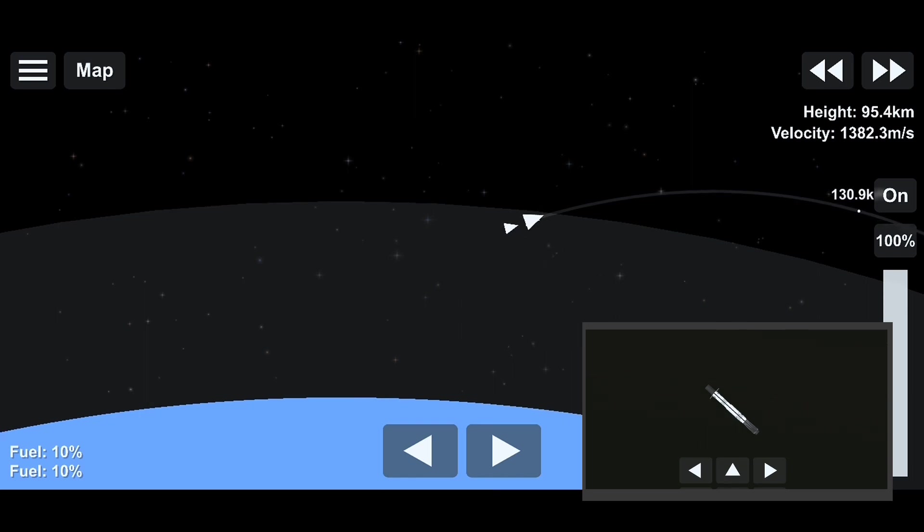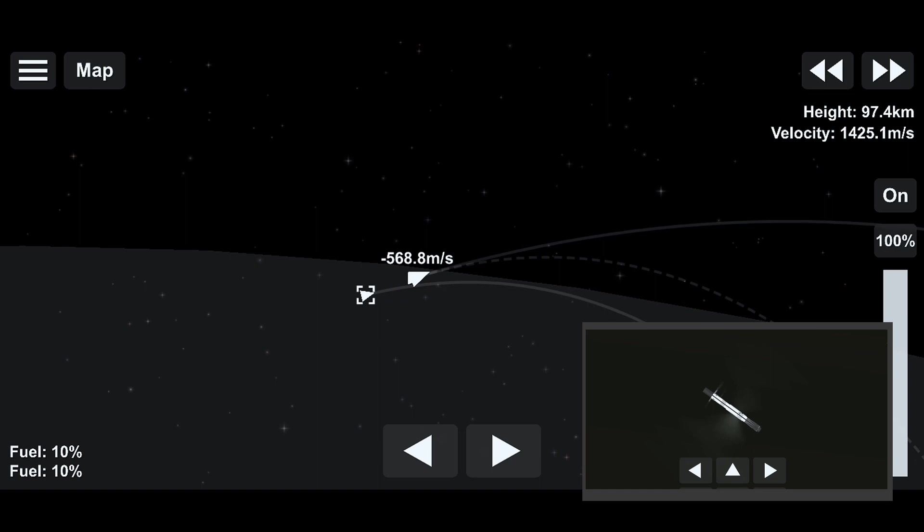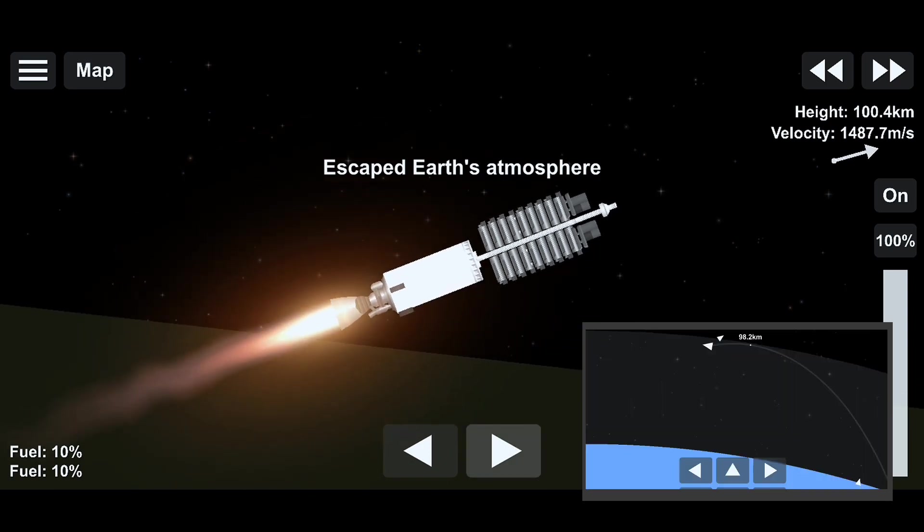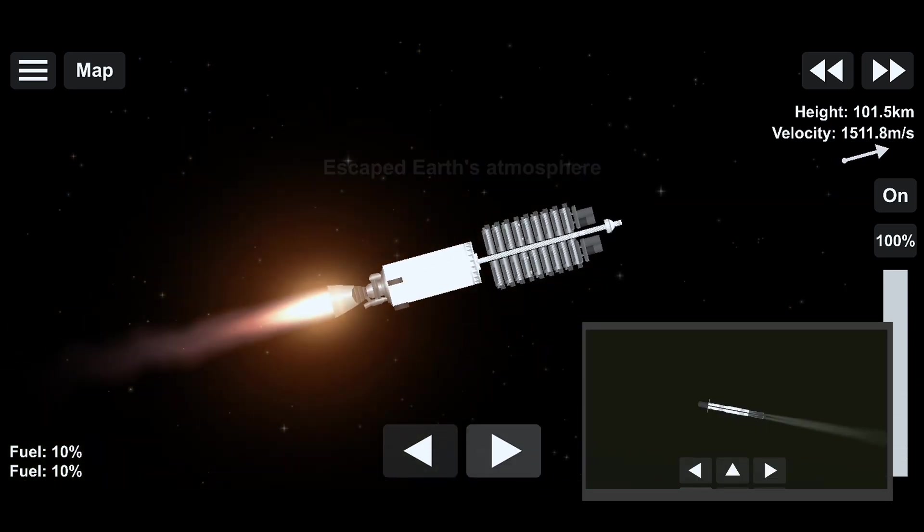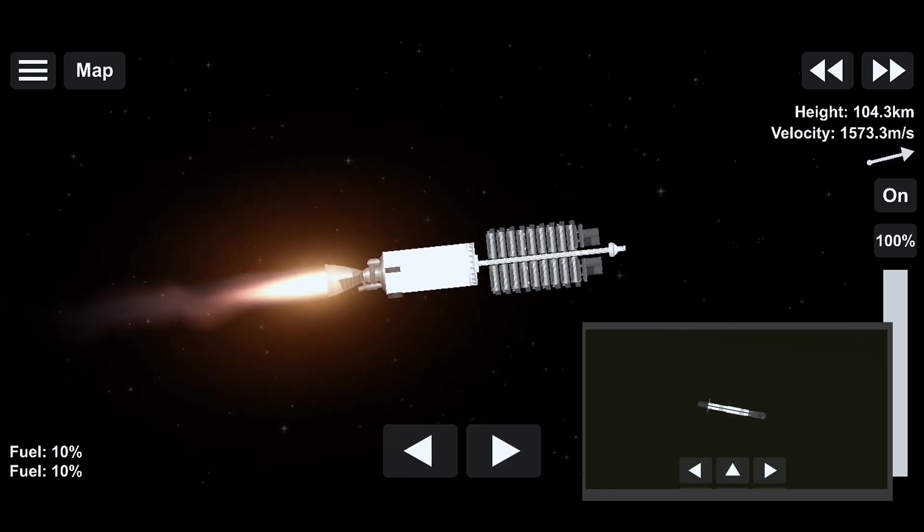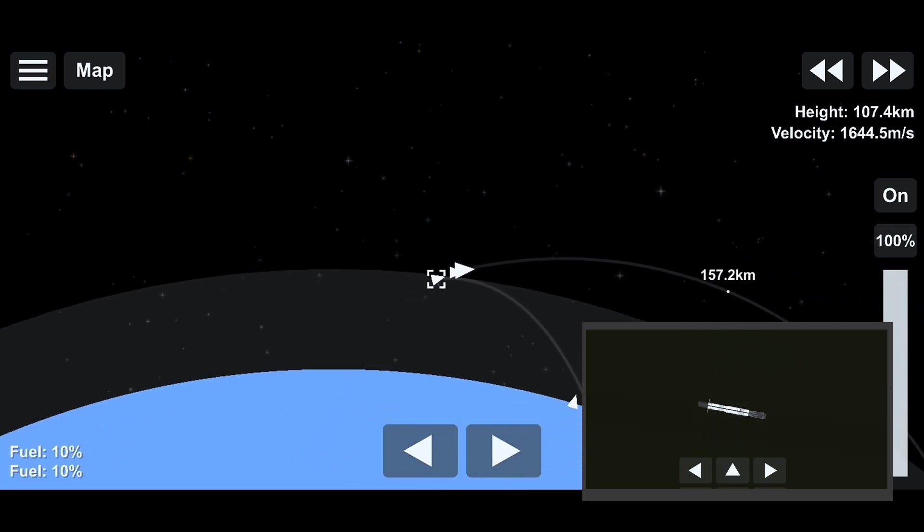So the Falcon 9 second stage continues at full power carrying the Starlink and Black Sky satellites to the first of two orbits. The first stage is continuing to coast to apogee and then it will begin to fall back to Earth and eventually two burns to land on the drone ship in the Atlantic Ocean. The trajectory right now continues to look right down the middle. Everything's looking good on Falcon 9.